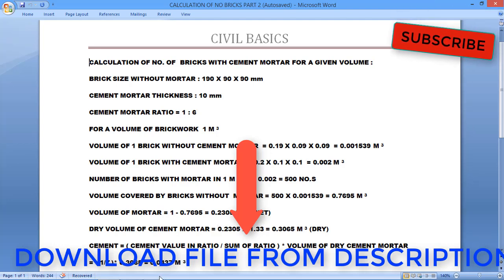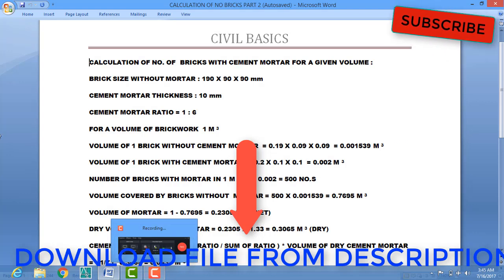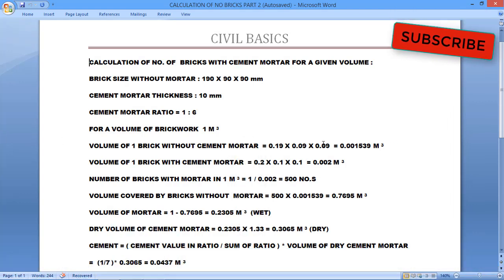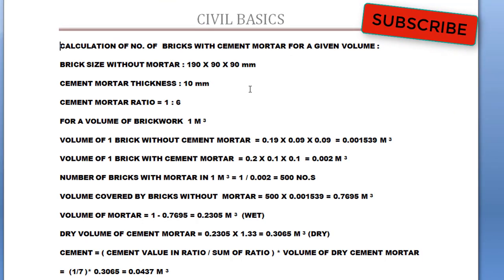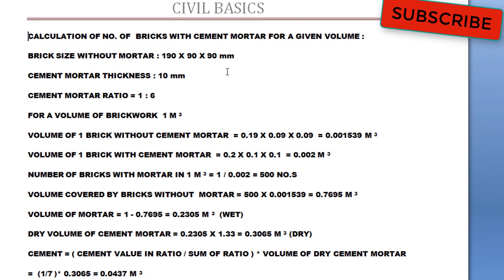Now, let's start today's topic. In today's topic, we are going to see calculation of number of bricks with cement mortar for a given volume. So, first of all, we'll start with our dimensions. Brick size without cement mortar is 190 by 90 by 90 mm. Cement mortar thickness we are taking 10 mm. Cement mortar ratio we are taking 1 is to 6. And for a volume of brick work, we are taking 1 cubic meter. Now, let's start the calculation.